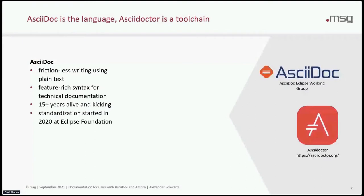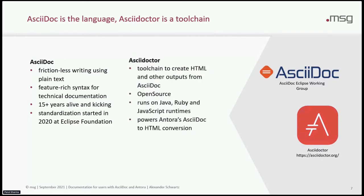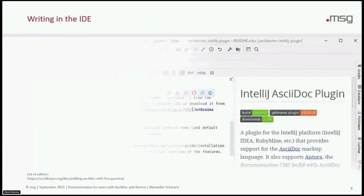AsciiDoc has been around for more than 15 years and is alive and kicking. Last year, a standardization has started at the Eclipse Foundation. Asciidoctor is the tool chain to create HTML and other output formats from AsciiDoc. It's open source, it runs on Java, Ruby and JavaScript runtimes, and it powers Antora's AsciiDoc to HTML conversion.